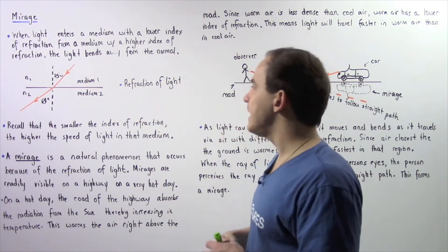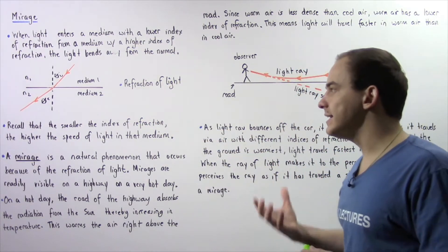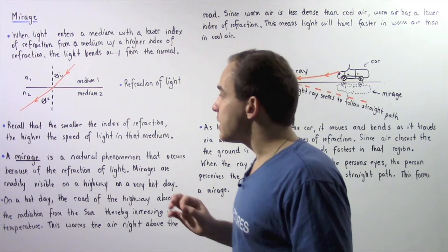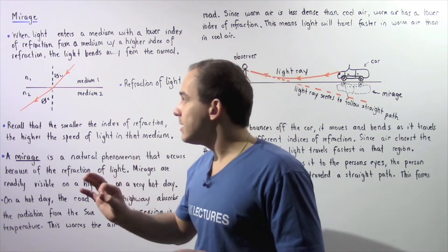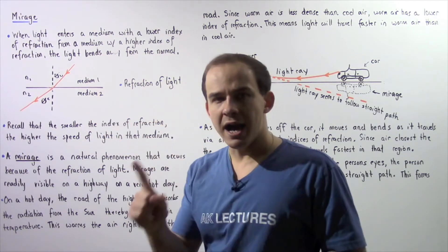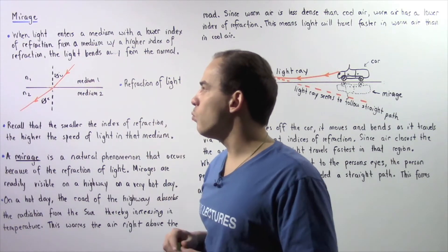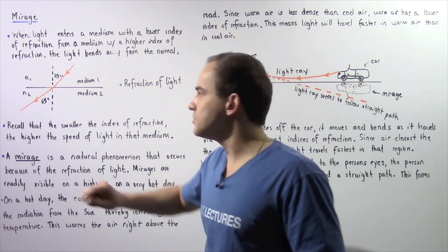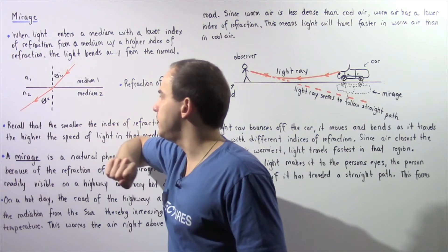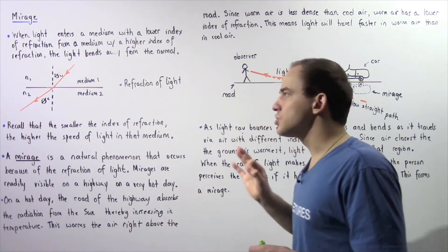This concept is known as the refraction or bending of light. Recall that the speed of light within medium two will be higher than the speed of light within medium one, because the index of refraction is lower in medium two than in medium one.